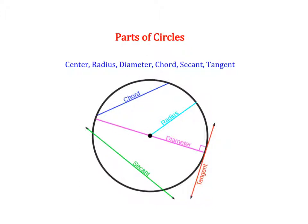There are two more line segments. A secant line is a line that goes through the circle, touching two parts, but it keeps going. Notice that the chord stops — its endpoints are on the circle — while the secant line keeps going. A tangent is a line that comes on the outside of your circle and touches it at one point, but keeps going.